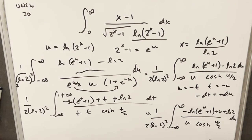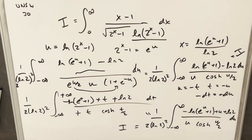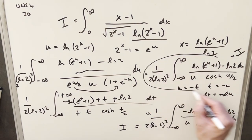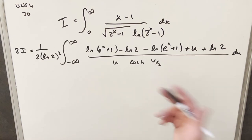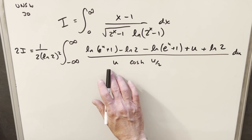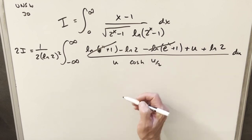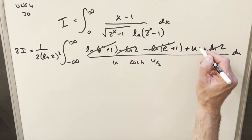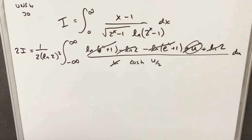I've converted this back to u. I'll call this integral I — but that's the same as our original integral I, and it's the same as this rewritten integral I. So I'll take these two copies and add them together. Since we have the same variable, same denominator, and same bounds, we can combine them into one integral. We get a lot of cancellation: the ln e to the t terms cancel, the minus ln 2 cancels with the ln 2, and the u cancels with the u. So all we have left is the integral of du over cosh of u over 2.